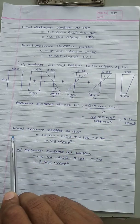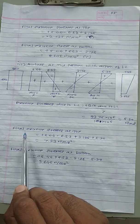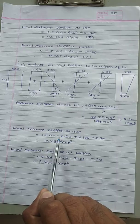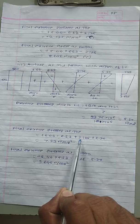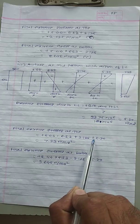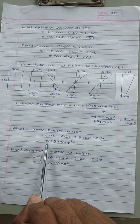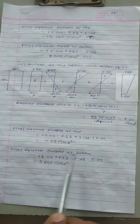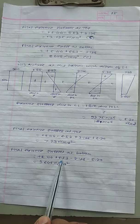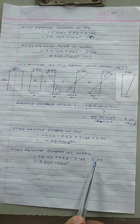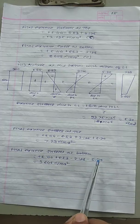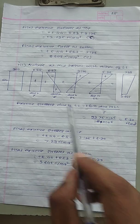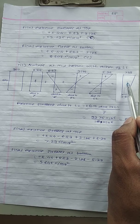Final extreme stress at the top (midsection, with live load) = 5.44 − 6.53 + 3.125 + 5.20 = +7.23 N/mm² (positive, compression). Final extreme stress at the bottom = 5.44 + 6.53 − 3.125 − 5.20 = 3.645 N/mm² (positive, compression). This is the final stress distribution diagram for this condition.